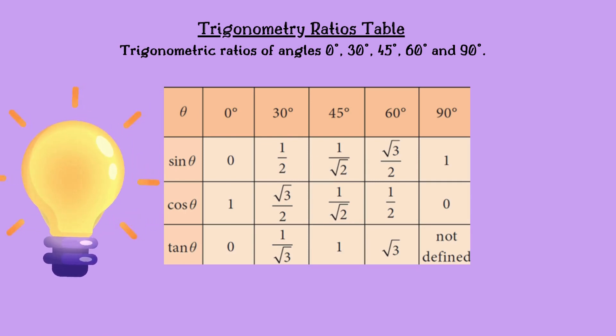Now cosine is inverse of sine. It means cos 0 is 1, cos 30 degree is root 3 by 2, cos 45 degree is 1 by root 2, cos 60 degree is 1 by 2, cos 90 degree is 0.